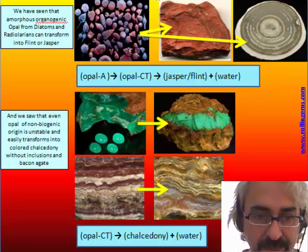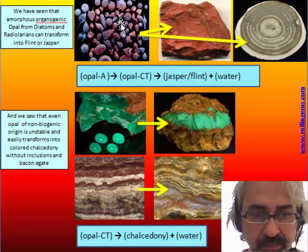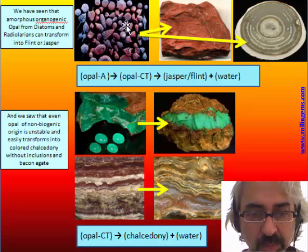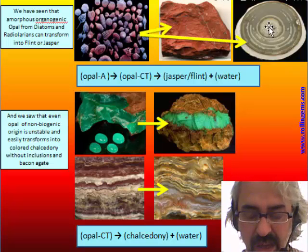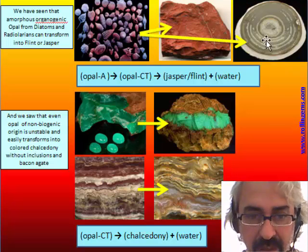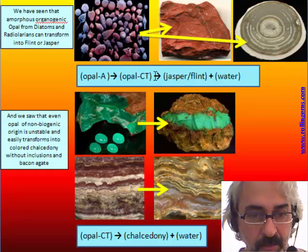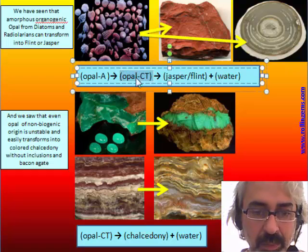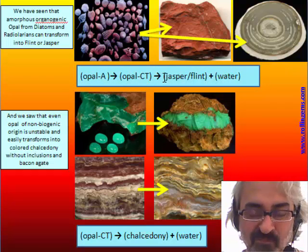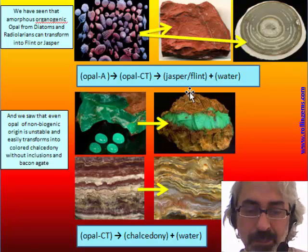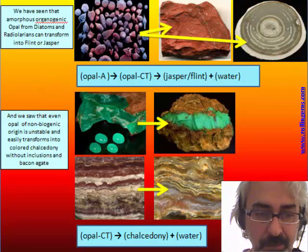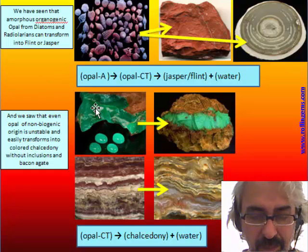We have seen during our course that organic opal like Radiolaria is responsible for the origin of Jasper and Flint. So we have a reaction that from organic opal transforms it into more crystalline opal — opal CT — and then we have releasing of water and the formation of Jasper.